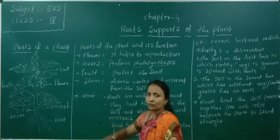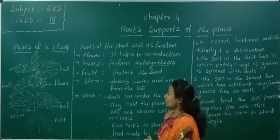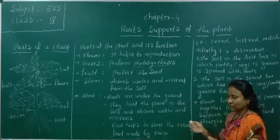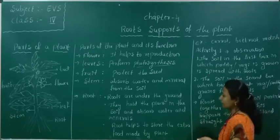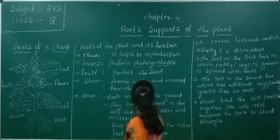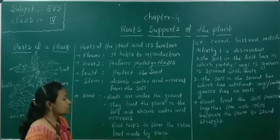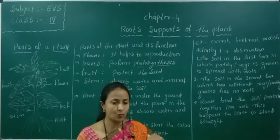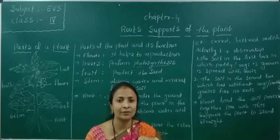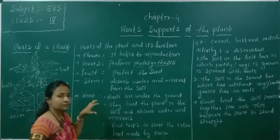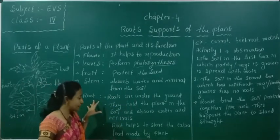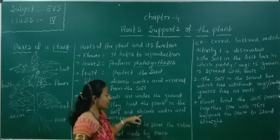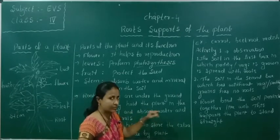Now the function of the root. Roots grow under the ground. They hold the plant in the soil and absorb water and minerals. These roots firmly hold the soil, and they absorb water and minerals from the soil.